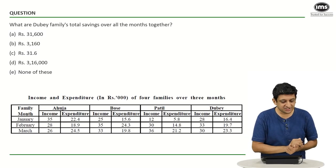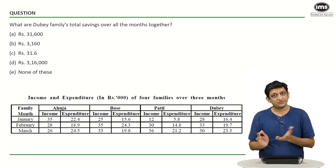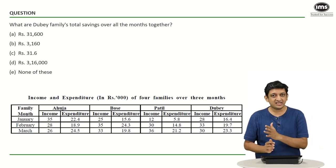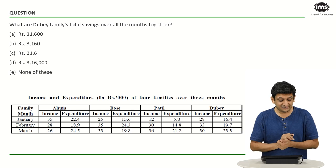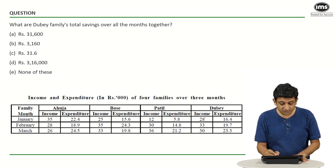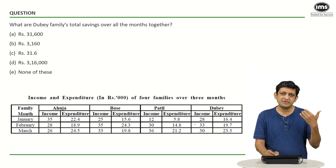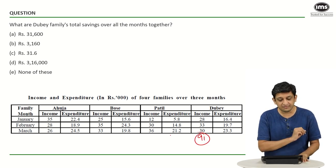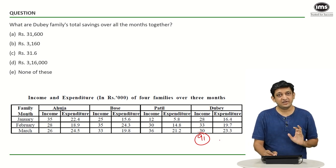This is a rather simple question. We have to figure out the Dubey family's total savings over all the months together. What we need to do is find all the income the Dubey family earned across the months and all the expenditures they incurred. Adding the incomes: 30 plus 33 plus 28 gives 63 plus 28, which is 91. So 91 is the total income they would have earned.